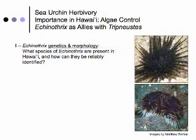We have three research components in our program. The first involves resolving biodiversity within the genus Echinothrix using genetics and morphology — before we can really investigate sea urchin herbivory by Echinothrix, we need to know what species are here and how to distinguish them.